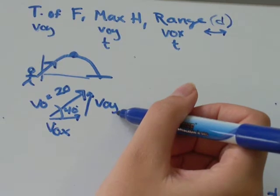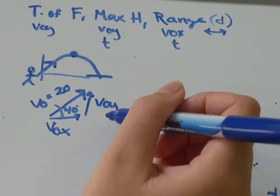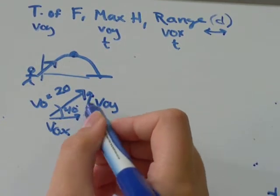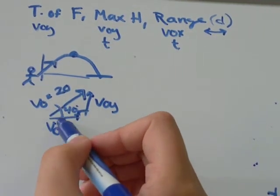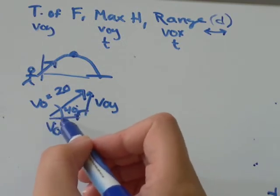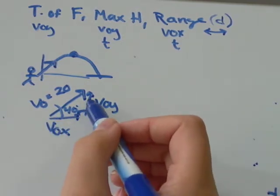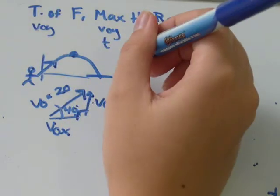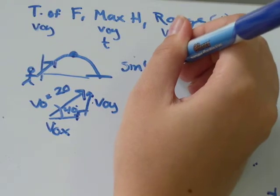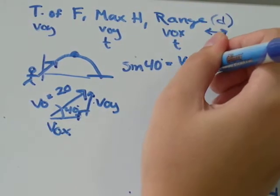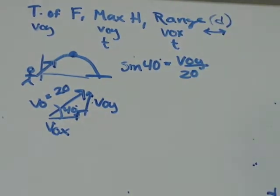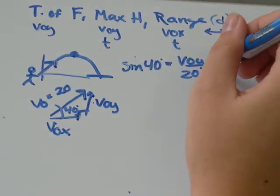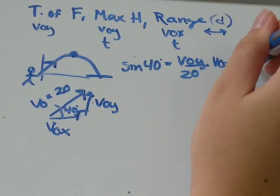So, the first thing we're going to do is find the y component of the initial velocity vector. Hopefully you can see that these form a right-angle triangle. The right angle will be right here, which makes this side the hypotenuse. With respect to the 40 degree angle, this would be the opposite side and this would be adjacent. So, for VOY, we're using opposite over hypotenuse, which is sine. So, sine of 40 degrees is going to equal opposite VOY over hypotenuse, which is 20. Sine of 40 is about equal to 0.64. So, multiply that by 20, and I get that VOY is about equal to 12.9.